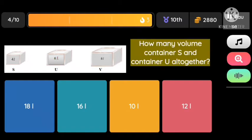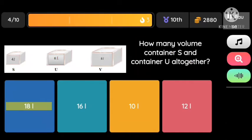Question: How many volume container S and container U altogether? Option 1: 18 liters, Option 2: 16 liters, Option 3: 10 liters, Option 4: 12 liters.